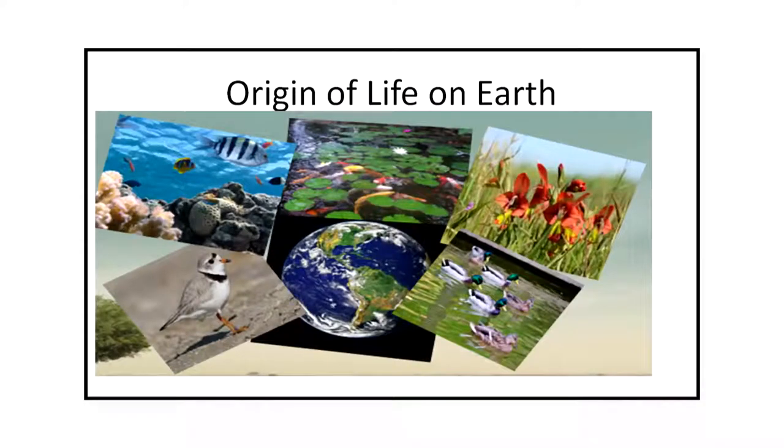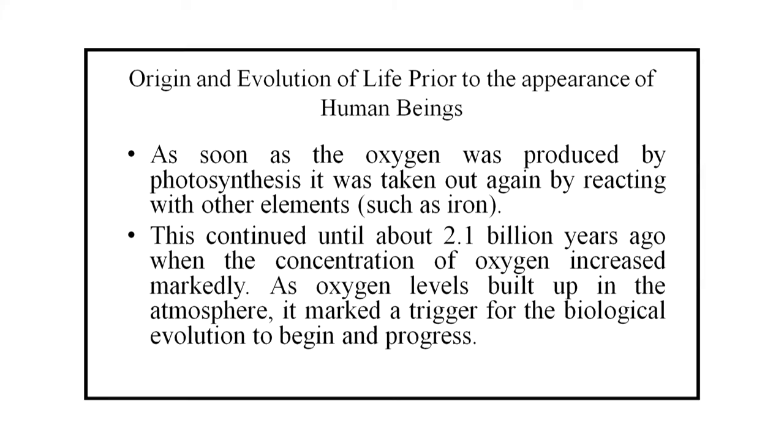Now we come to the next section: origin and evolution of life on Earth including human beings. As soon as the oxygen was produced by photosynthesis, it was taken out again by reacting with other elements. This continued until about 2.1 billion years ago when the concentration of oxygen increased markedly. As oxygen levels built up in the atmosphere, it marked a trigger for the biological evolution to begin and progress.